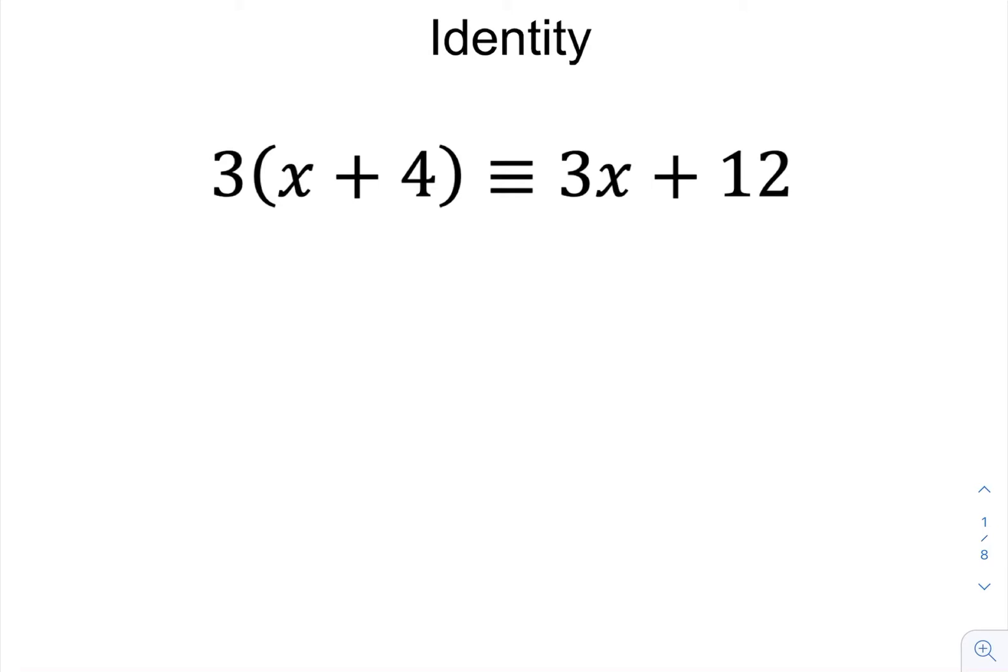So you can see here this is an identity, which means that both expressions are equal to each other for all values of x. Whatever values of x you substitute into the left-hand side, you will always get the equivalent answer from the right-hand side. Hence why we use the fancy identity symbol in the middle there.